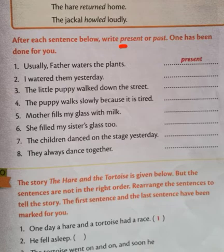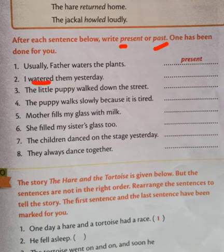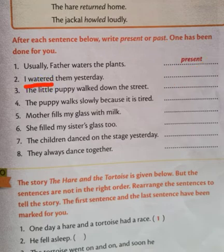Second sentence: 'I watered them yesterday.' The verb 'watered' shows that the action already happened in the past. So we write 'past' here. 'Watered' is the second form of the verb. In any sentence where the second form of the verb is used, it is past tense.